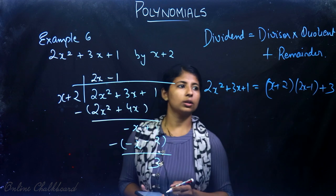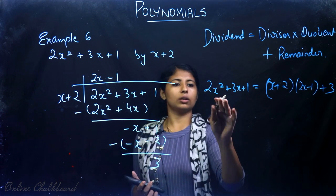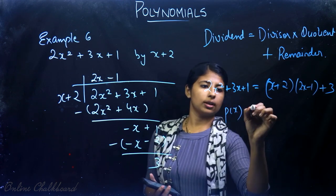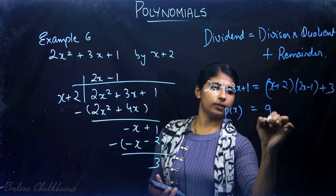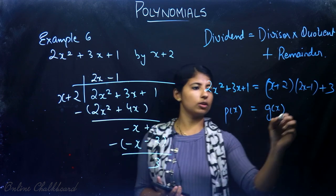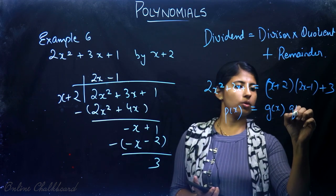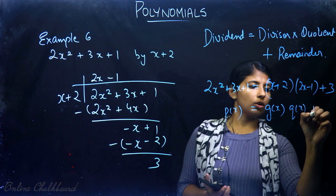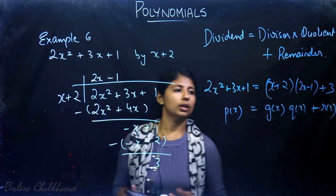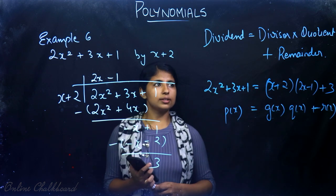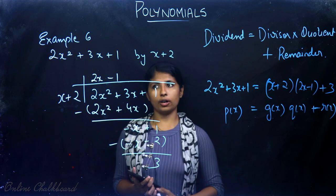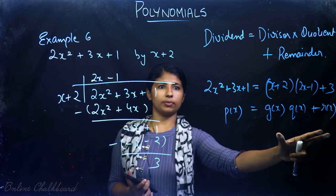So here, if P(x) is divided by polynomial G(x), we get quotient Q(x) and remainder R(x), giving us P(x) = G(x)·Q(x) + R(x). This is the division algorithm for polynomials.